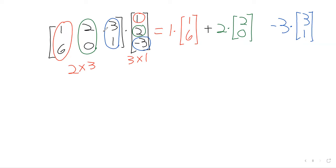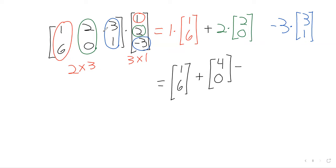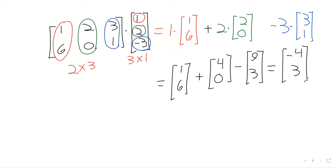Following the pattern, we take the third entry of the vector and the third column of the matrix. Then we add all of these together. We do all of the scalar multiplications and then the additions. So we get: one plus four is five, minus nine is negative four; six plus zero is six, minus three is three. That is our matrix-vector multiplication.